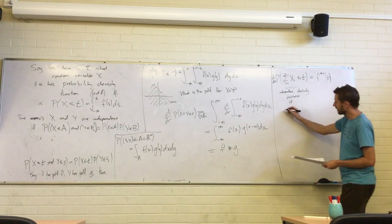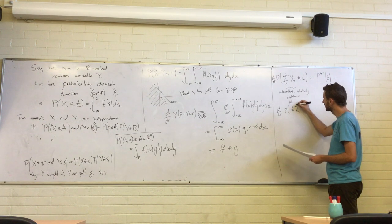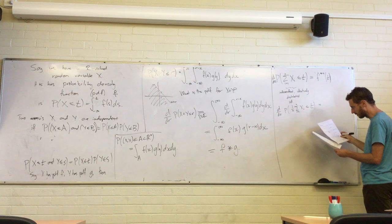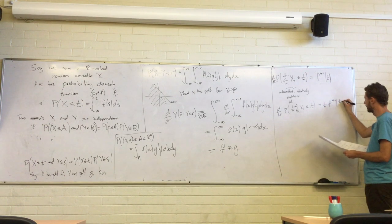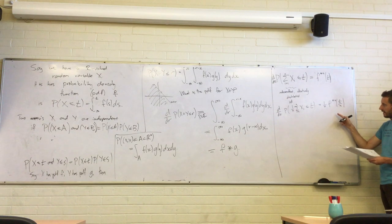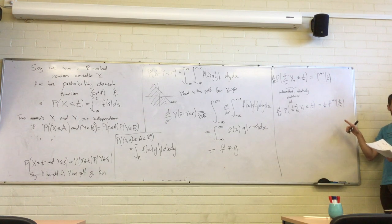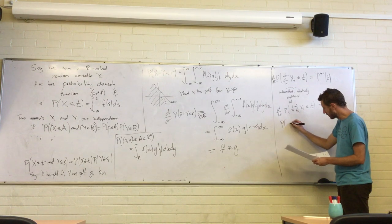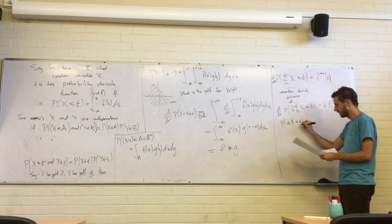The last thing we want to know is the PDF for the average of some IID variables, and this one is a little bit bulkier. Maybe it's a little bit surprising that there's a rescaling argument here. The probability that if you've got some random variable and you want to multiply it by a constant alpha — well, you can just compute this directly.